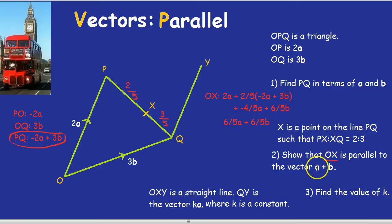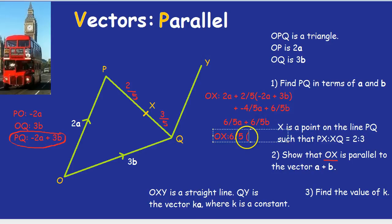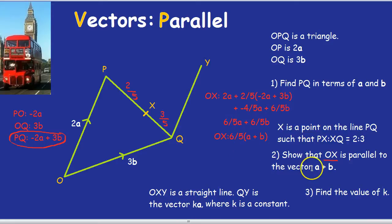Now how does that show that it's parallel to the vector a plus b? To do that bit of the question, we're going to need to factorise. But don't worry, it's quite a simple factorisation. What do they both have in common? They both have in common 6 fifths. So we know now that OX is 6 fifths times a and 6 fifths times b. And we have at the same time proven that it's parallel to a plus b. How? Because we've proven it's a multiple. A plus b is a direction, just think of it as north-east. OX, we're saying now, is just north-east, but just go 6 fifths along north-east. But we've proven it is in the direction of north-east. In other words, we've proven it's parallel to that direction. So that's question two done.